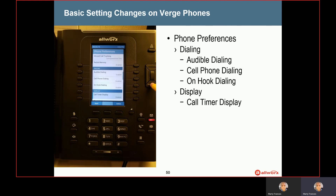The next option is cell phone dialing. On the Allworks phone, when you go to make a phone call, if you dial nine and then start dialing a number and make a mistake, you have to hang up and get another dial tone and start over. Whereas with cell phone dialing enabled, you can dial some digits, erase one or two mistakes, correct them, and then when you're ready to actually dial, you hit the little phone icon on the screen and it will dial the number — similar to how a cell phone works where it doesn't actually dial until you hit the send button.